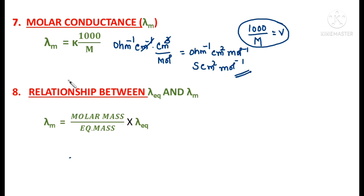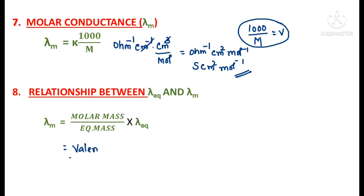Finally, the relationship between equivalent conductance and molar conductance: λ_m = (molar mass / equivalent mass) × λ_eq. Since molar mass divided by equivalent mass gives valency, this simplifies to λ_m = valency × λ_eq. We have covered key formulas and units in this session; the rest will continue in Part 2. This is Anita Raj signing off — thanks for watching.